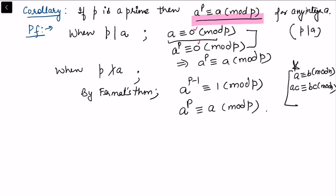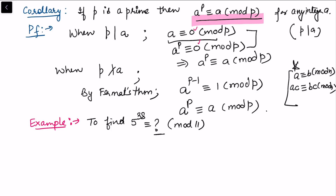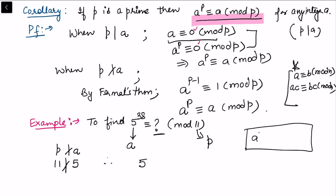Let's consider an example to apply Fermat's theorem. We want to find 5^38 modulo 11. Here p = 11 and a = 5. Since 11 does not divide 5, we can apply Fermat's theorem, which tells us that 5^10 ≡ 1 (mod 11).